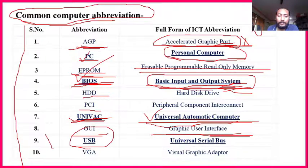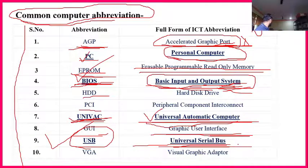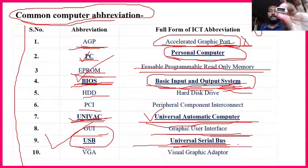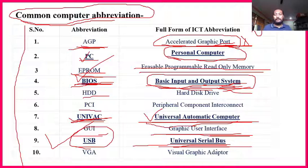GUI — Graphical User Interface — is not important. USB is very important — Universal Serial Bus. I am using a USB to connect a pen drive to my laptop or mobile. This small device is called USB. Universal Serial Bus — used to connect devices. VGA — Video Graphics Adapter — is not at all important.